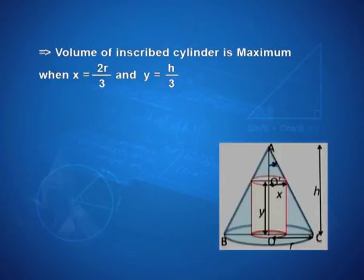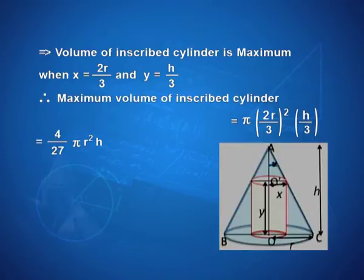In this case, we want the maximum volume. So, what is the maximum volume? Putting x as 2r/3 and y as h/3, we get 4/27 π r² h. But that was not the question. We wanted to get an expression in terms of α.